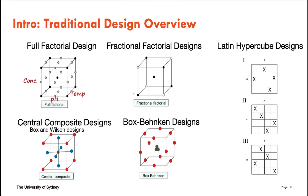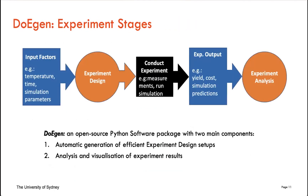A brief overview of typical experiment stages: it starts with the input factors, which can be real measurements such as temperature and time, or simulation parameters. Then the experiment design stage happens, where you build an optimal set of parameters. The experiment is then conducted — either real measurements or running simulations. Finally, the output of the experiments is analyzed with respect to yield, cost, or error rate in the simulation predictions.